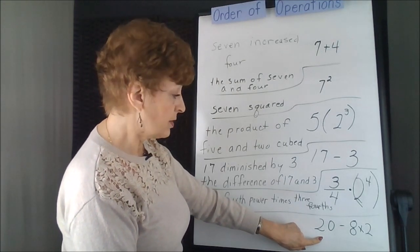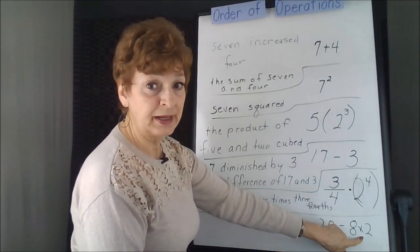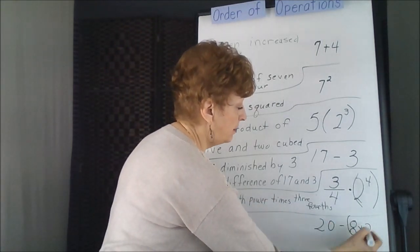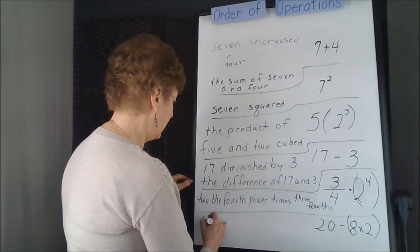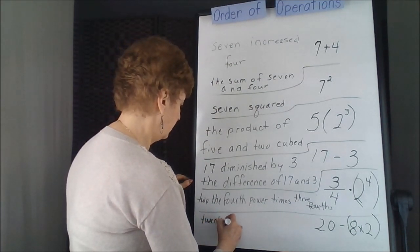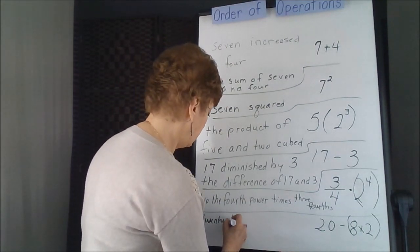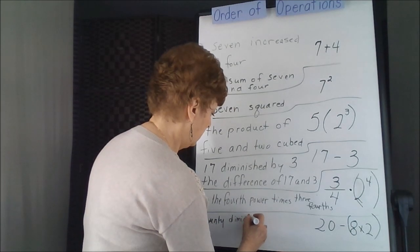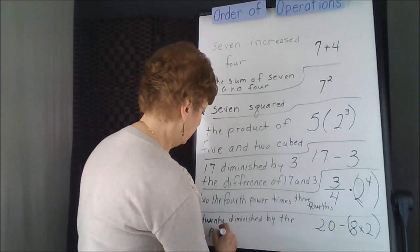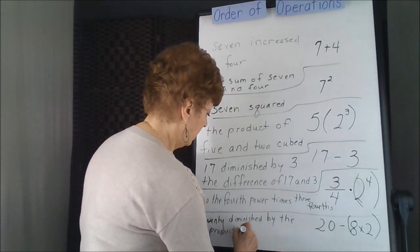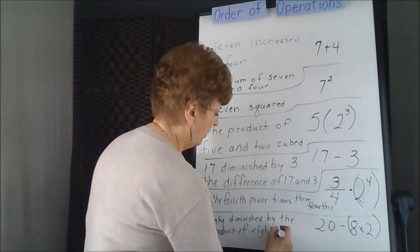This one also has an order of operations. We have a subtraction and a multiplication. Multiplication has to be done before the subtraction. So we could say 20 diminished by the product of 8 and 2.